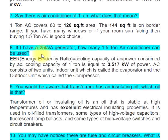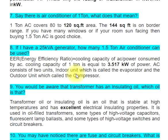Question 8: If I have a 25 kVA generator, how many 1.5-ton air conditioners can be used? EER (energy efficiency ratio) equals cooling capacity of AC divided by power consumed by AC. The cooling capacity of 1 ton is equal to 3.517 kilowatts of power. An AC consists of two units: the indoor unit called the evaporator, and the outdoor unit called the compressor.